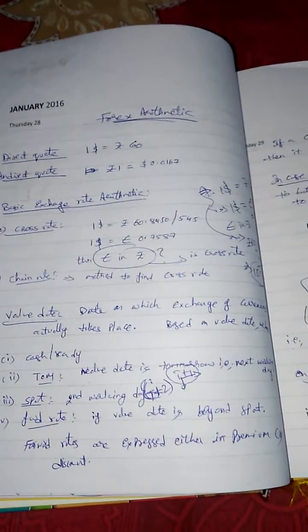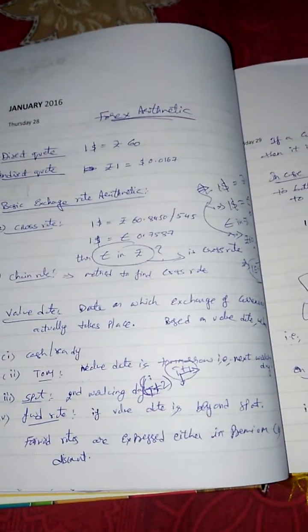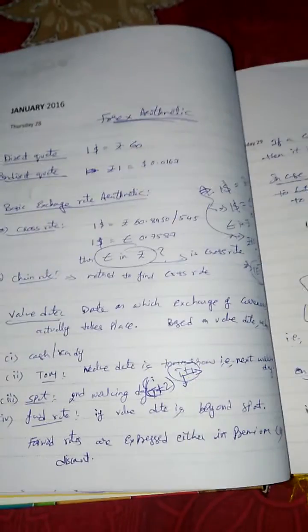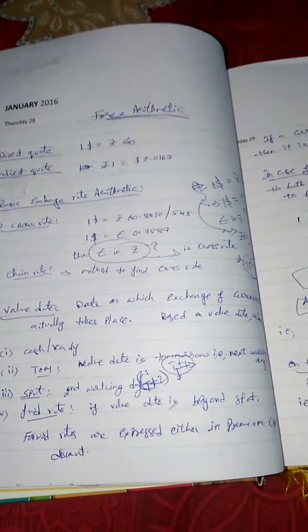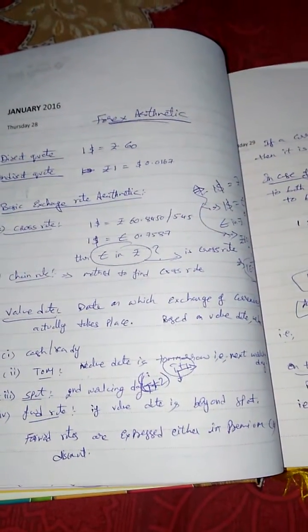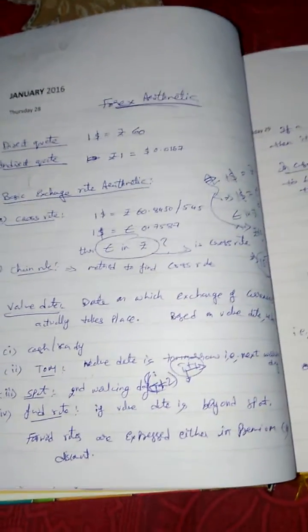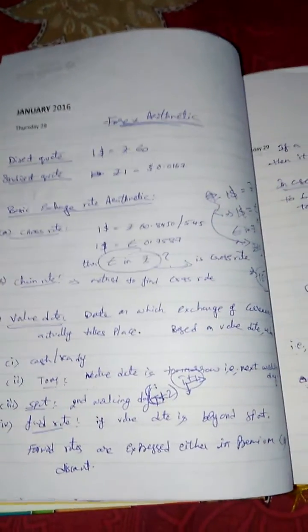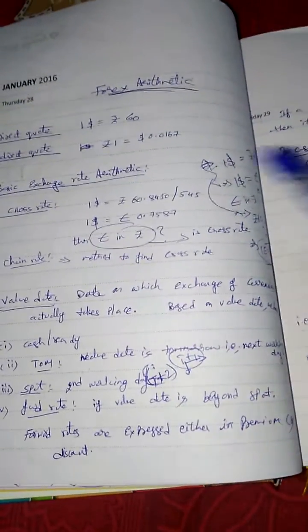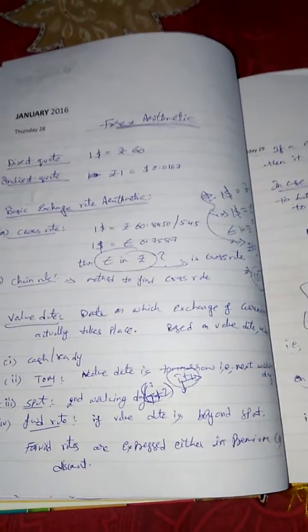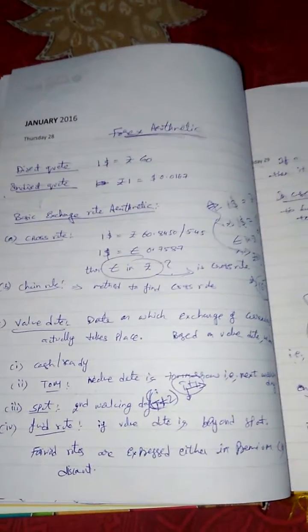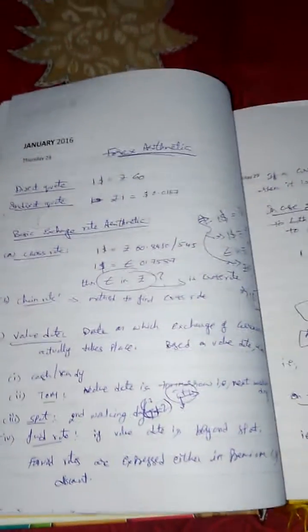The actual exchange of currency takes place at T+2 — that is the spot value date. Forward rate is that market where the exchange of currency or the value date is beyond the spot date, that is after two working days. It can be three working days, one month, 90 days — anything where the value date is beyond spot.